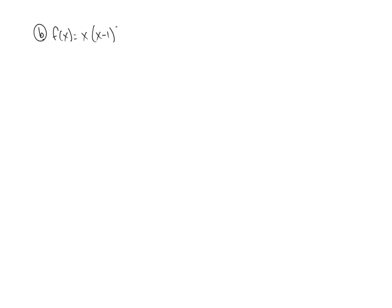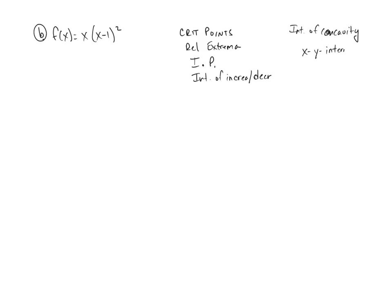We've got one final problem — part B — and it's the same type as the other one. In this case we have f of x equaling x times x minus 1 squared. We need to find: the critical points, relative extrema, inflection points, intervals of increasing or decreasing, intervals of concavity, x and y intercepts, and then sketch a graph.